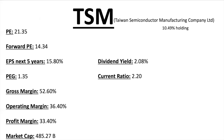EPS for the next five years is the annual compounding rate analysts think the stock will grow — so 15.8% every single year compounded is pretty good growth. The PEG ratio is the PE number (21.35) divided by EPS for the next five years (15.8), giving you that number. Gross margin is revenue minus cost of goods sold — anything over 50% is good. Operating margin is gross margin minus all operating expenses like R&D and G&A. Profit margin is net income after taxes and interest. Market cap is shares outstanding times share price.